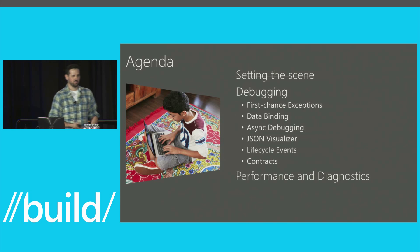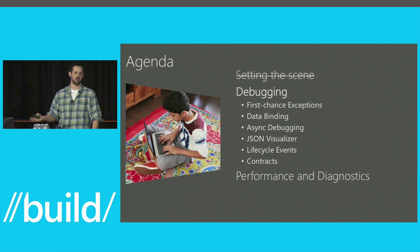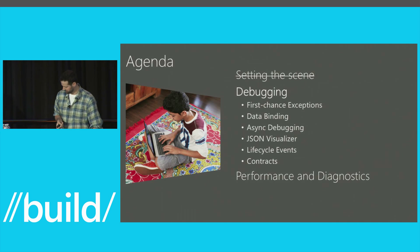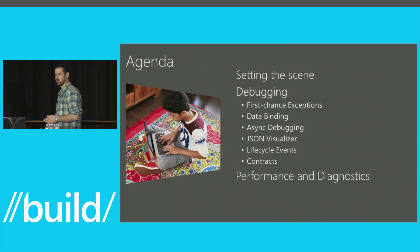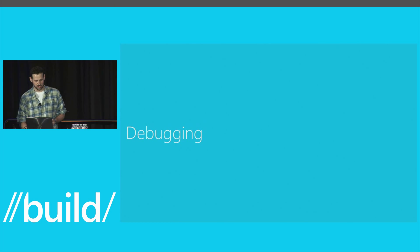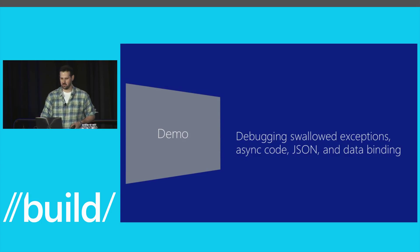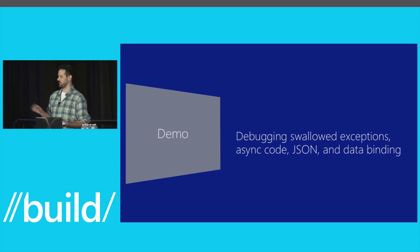I've got a demo here — it's mostly working. I'm going to take a lap through this demo with the debugger, cover the features I have here, and then go into some performance analysis tools. This is a very demo-heavy session — 90% Visual Studio and code. I'd appreciate you saving questions until the end. We're going to start with debugging, specifically how to debug swallowed exceptions, async code, JSON, and data binding.